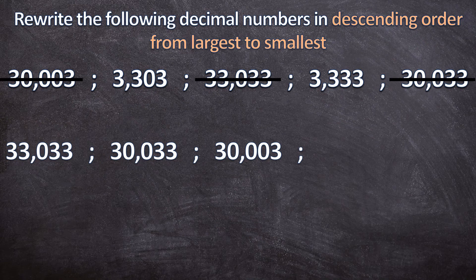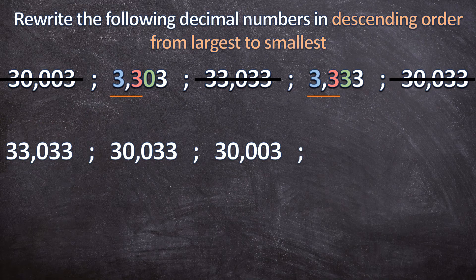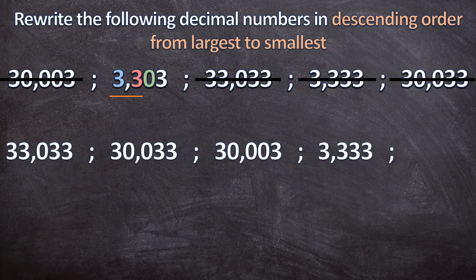Now we only have two decimal numbers left. We start with the highest place value — the ones are both 3, the tens are both 3, so we carry on to the hundreds. There we have a bigger number: 3 is bigger than 0. So 3,333 is the fourth biggest number and we cancel it. Our last and smallest decimal number is 3,303.